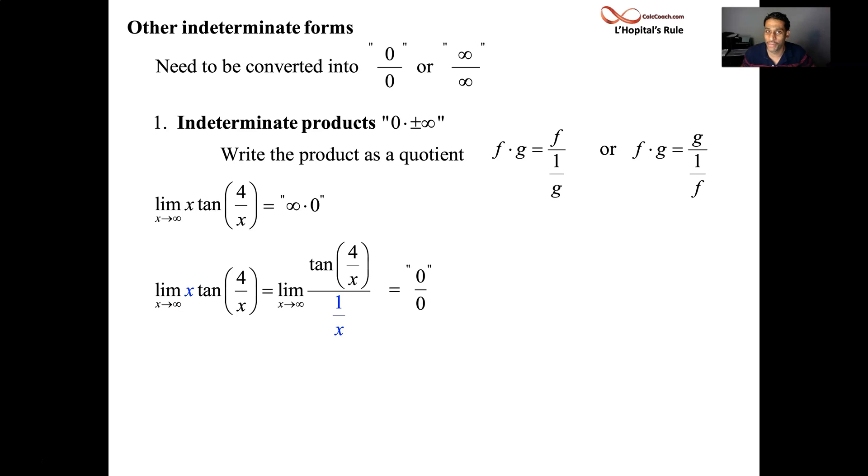Okay. Now we have to take the derivative. Tangent of 4 over x's derivative. Well, tangent of anything has, as its derivative, secant squared of that. Okay. So we're going to start off with secant squared of 4 over x. But then we have to multiply by 4 over x's derivative. Okay. And that's negative 4 over x squared. 1 over x's derivative in the denominator. Negative 1 over x squared.